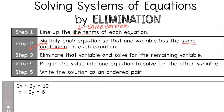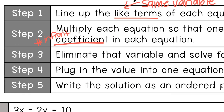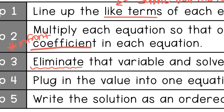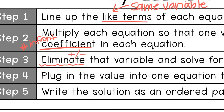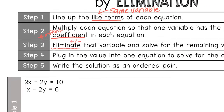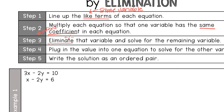Step three: eliminate that variable and solve for the remaining variable. That's why it's called elimination — we're going to eliminate one of the variables by either adding or subtracting the equations. Step four is to plug in the value into one equation to solve for the other variable, then write the solution as an ordered pair — always x comma y.